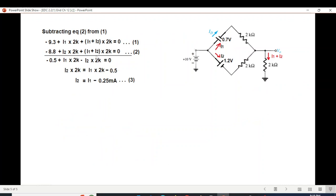Now if we subtract we can get this term cancelled. So subtracting equation 2 from 1 we get a very simplified equation and from this equation we can calculate I2 in terms of I1. So I2 is I1 minus 0.25 milliampere.